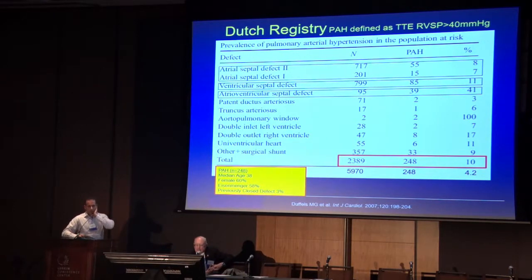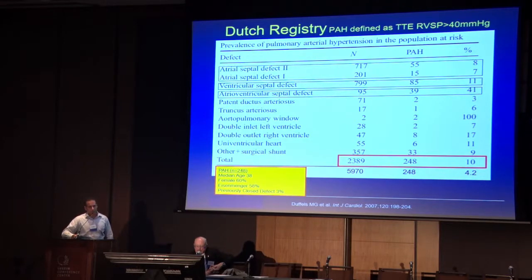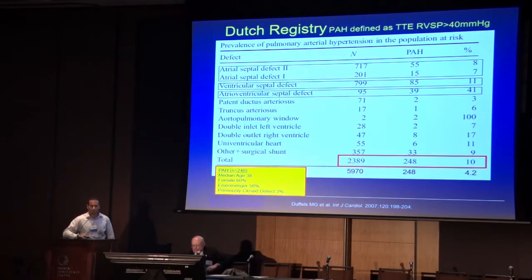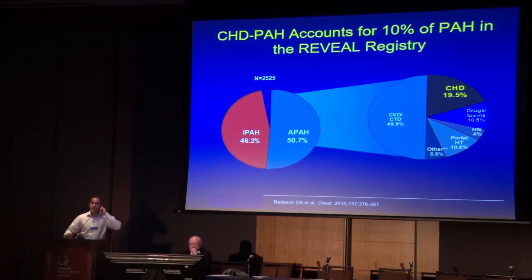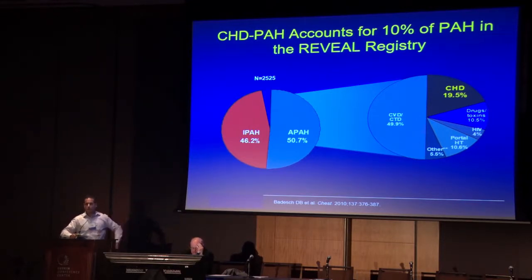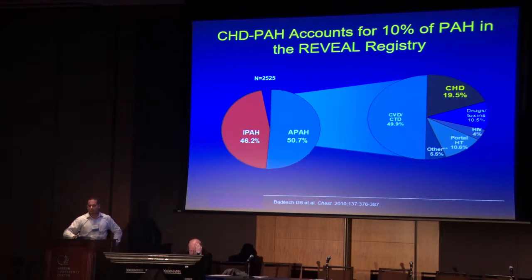In the PAH group of 248, the median age was 38 — they tend to present younger. PAH is predominantly female, and a lot of research looks at the 'estrogen paradox' — why females get it more than males. Of the 248, 58% had Eisenmenger's. In the US registry of about 3,500 PAH patients, half is idiopathic PAH, and of the associated conditions, 20% is congenital heart disease — about 10% of all PAH seen at university centers.